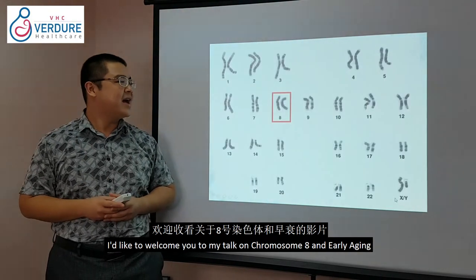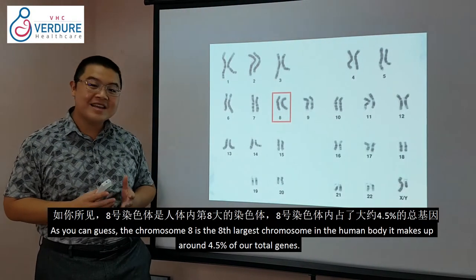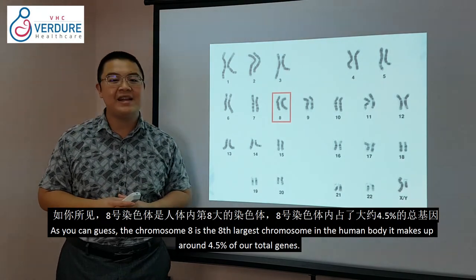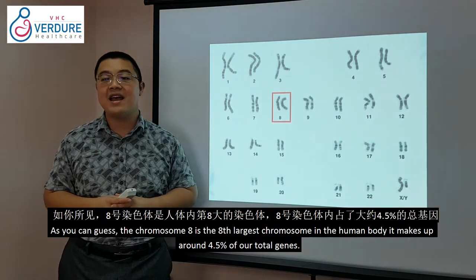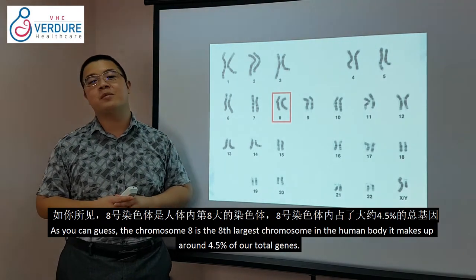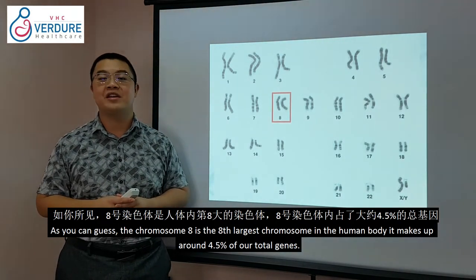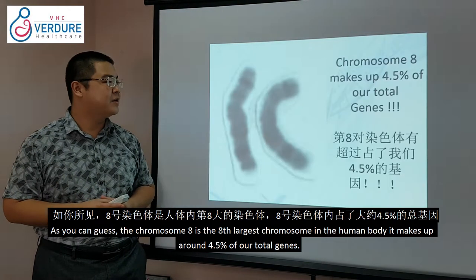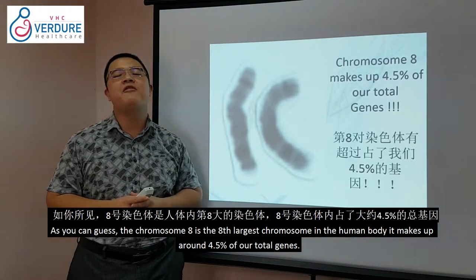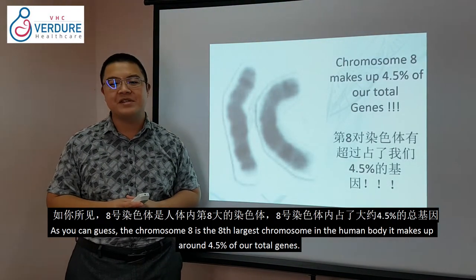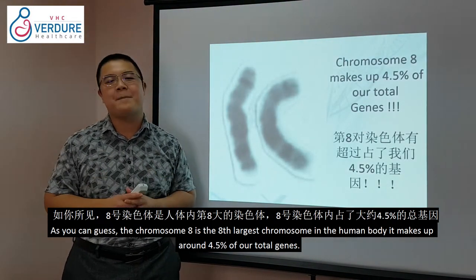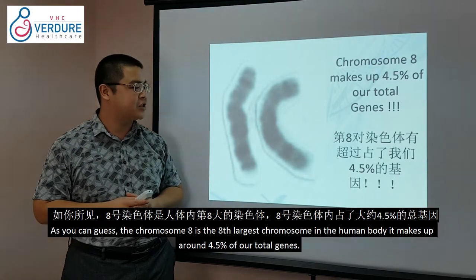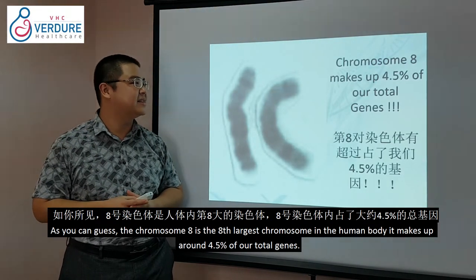Chromosome 8 is actually the 8th largest chromosome in the human body, and it makes up about 4.5% of our total genes.